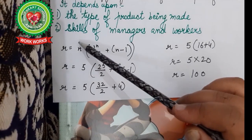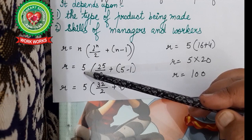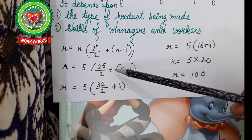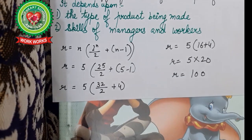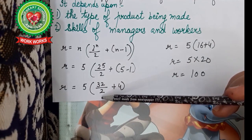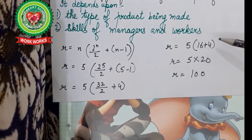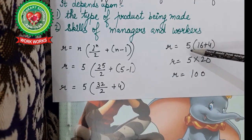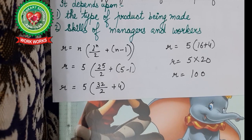Let us solve for N equals 5. Substituting: R = 5 × (2^5 / 2 + 5 − 1). Now 2 raised to the power 5 equals 32. Dividing 32 by 2 gives 16, and 5 minus 1 gives 4. So 16 plus 4 equals 20. Multiply by N: 5 × 20 = 100. Therefore, when the number of subordinates is 5, the number of relationships is 100.